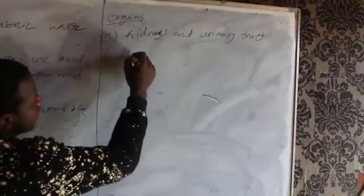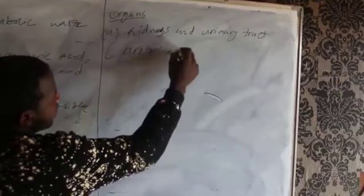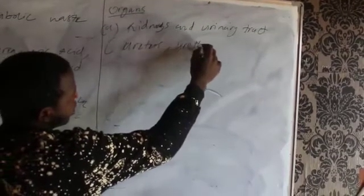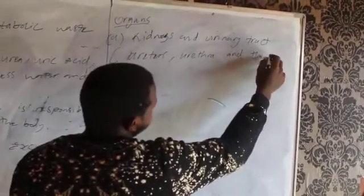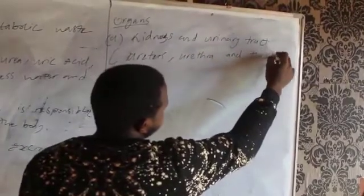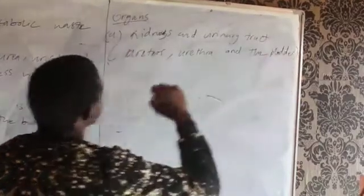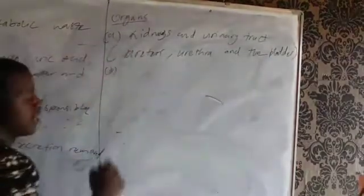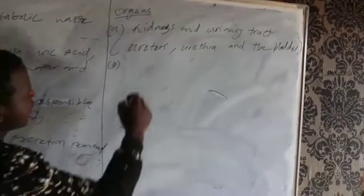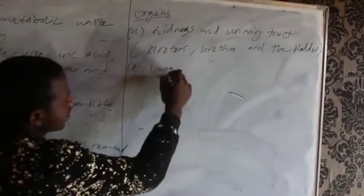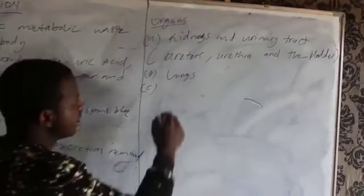In the urinary tract we have the ureters, the urethra, and the bladder. The other organ that facilitates excretion is the lungs, and the other organ is the skin.